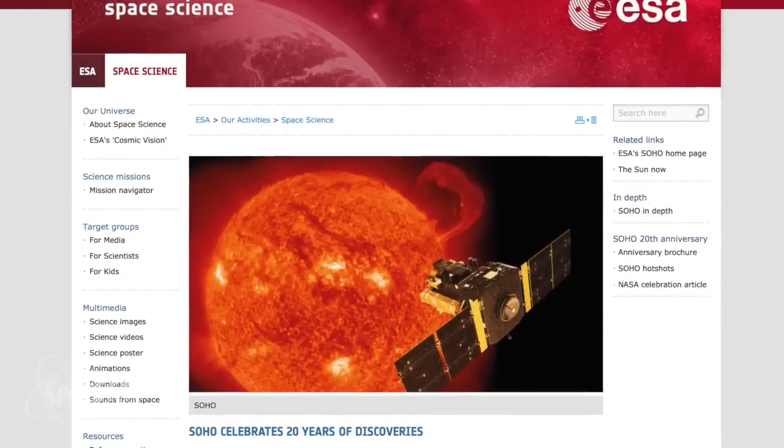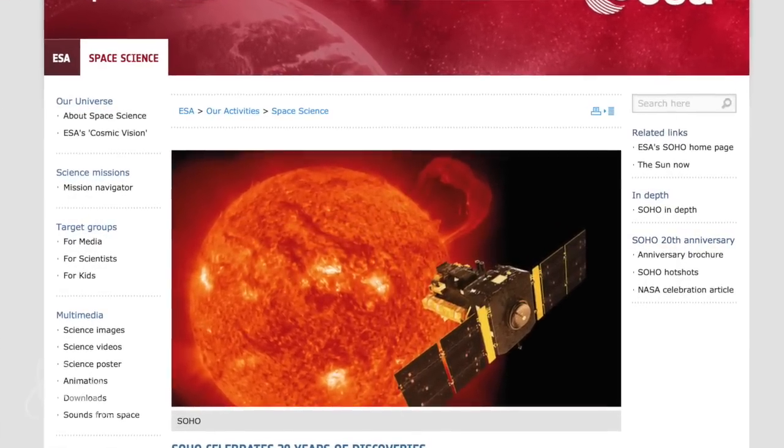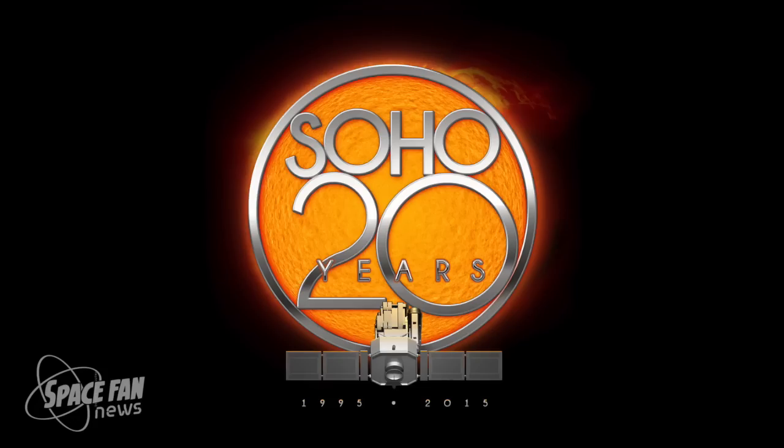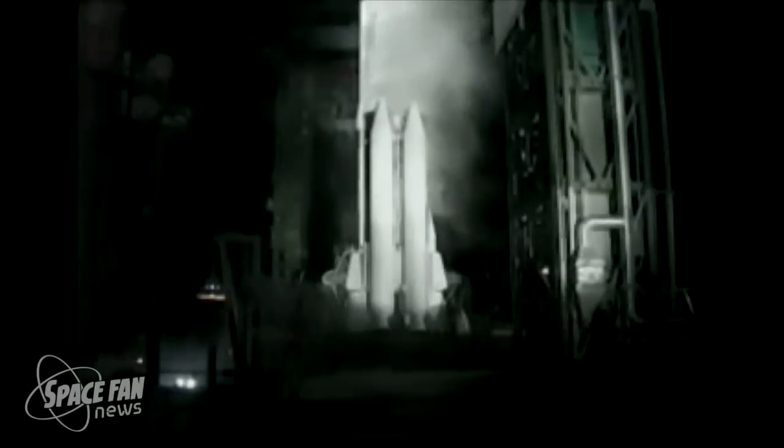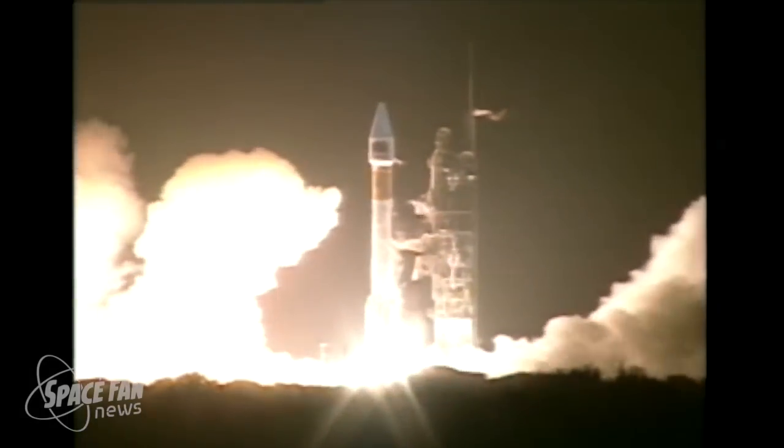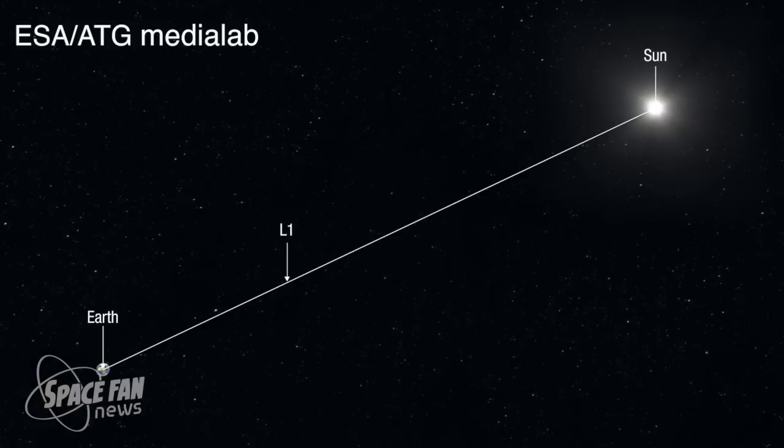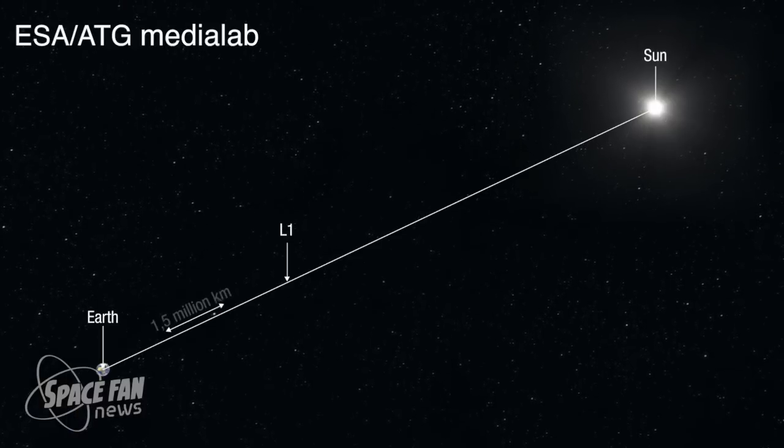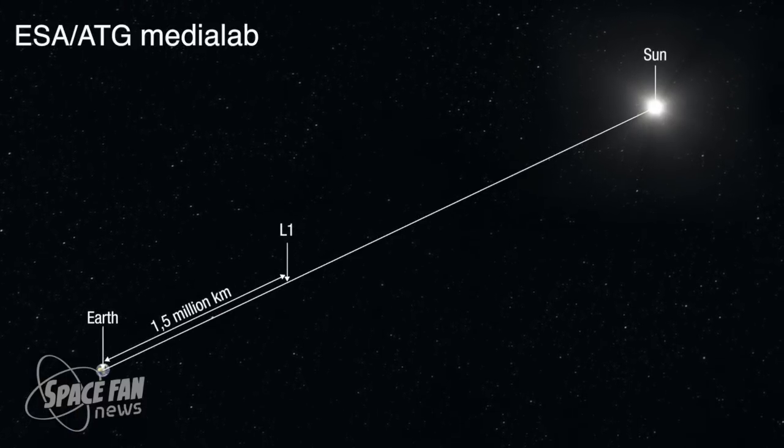Last week, on December 2nd, the Solar and Heliospheric Observatory, also called SOHO, celebrated its 20th anniversary. Launched on 2nd December 1995 and operated by NASA and ESA, SOHO has quietly taken decades of solar data from the L1 point, an analogous spot to L2 only between the Earth and the Sun.